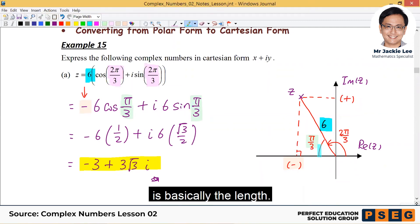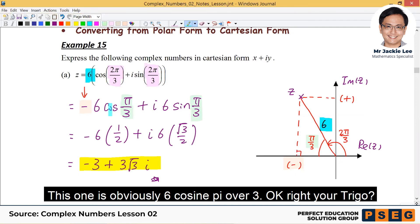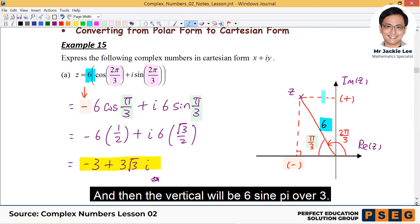I mentioned basically is the length, this one obviously is 6 cosine π over 3, right? You should know. And then the vertical will be 6 sine π over 3. Like that. So there are two things we need to do. One is to work out the sign, plus or minus. The other is to work out the, for this case, work out the angle.